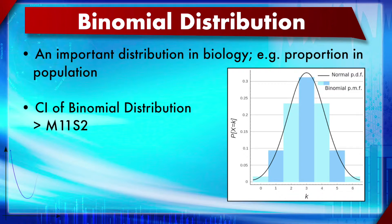This is a discrete probability distribution. As you can see in the picture, the bell-shaped diagram is for the Gaussian distribution, while for the binomial distribution it is a count. To highlight the discreteness, there is a bar diagram. It is a very important distribution in biology - for example, proportions in the population.